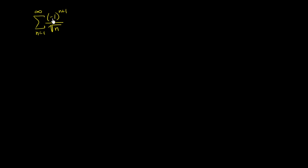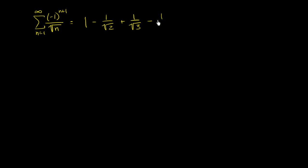We've got an infinite series here: negative one to the n plus one, over the square root of n. Let me expand it out. When n equals one, the first term is negative one to the second power, so it's positive — it's one over one, so it's one. Then minus one over the square root of two, plus one over the square root of three, minus one over the square root of four, and it just goes on and on forever.